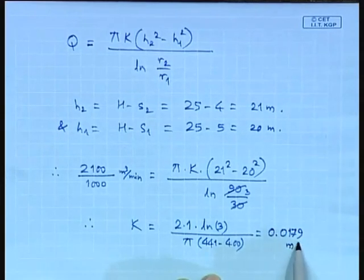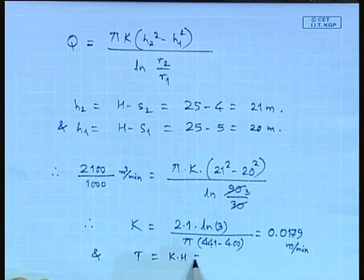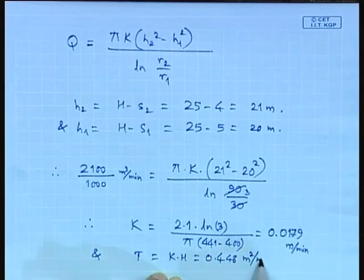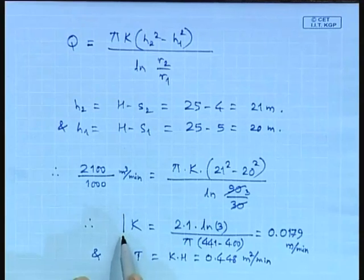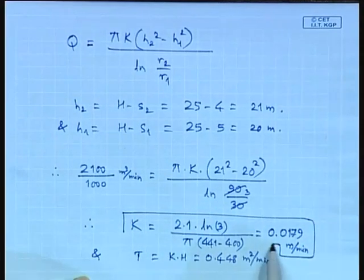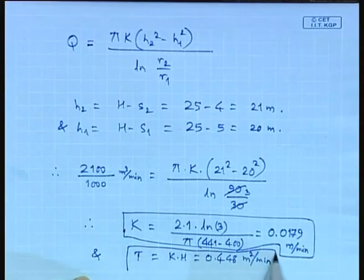The coefficient of permeability k = 0.0179 m/min. The transmissivity T is simply given by k times h = 0.0179 × 25 = 0.448 m²/min. These are the answers. This is how we can use well data to estimate the formation constants of the aquifer.